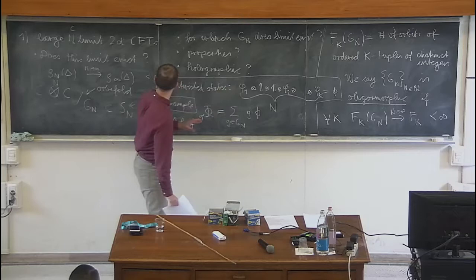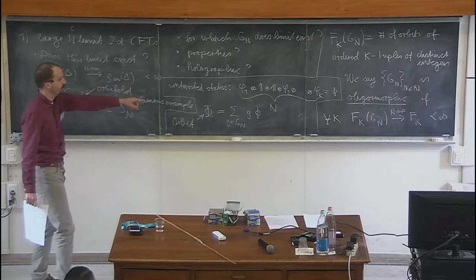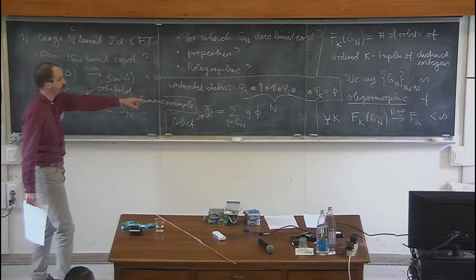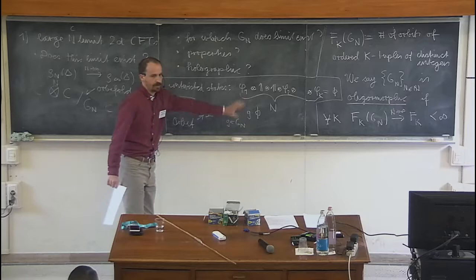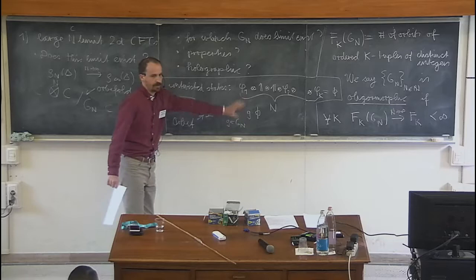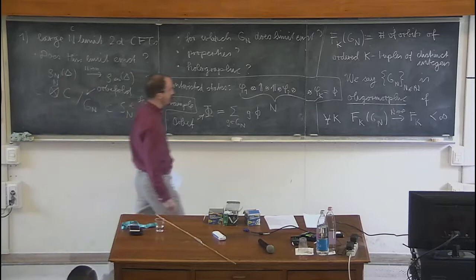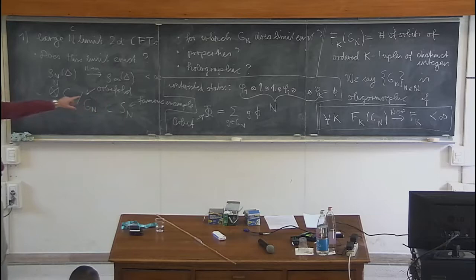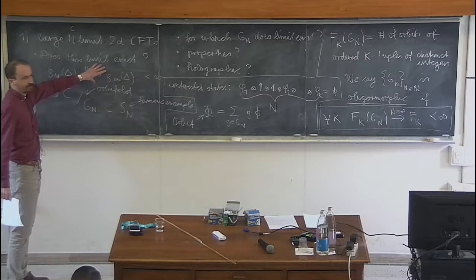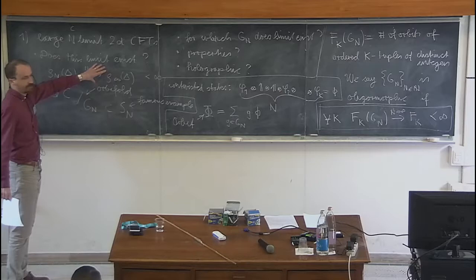This is the condition that, as we send N to infinity, the number of states should remain finite. If the number of orbits remains finite, then at least in the untwisted sector the number of untwisted states will remain finite. With a slightly more careful argument, one can also see that the number of twisted states remains finite. So this is a necessary and sufficient condition for a family of permutation groups G_N to lead to a family of CFTs with a well-defined large N limit in terms of the spectrum.